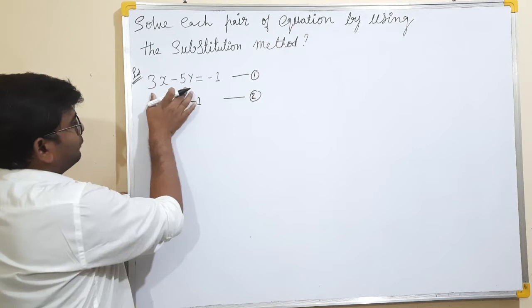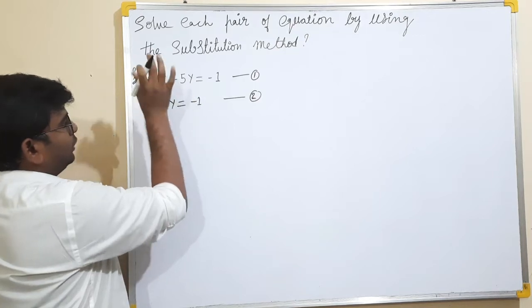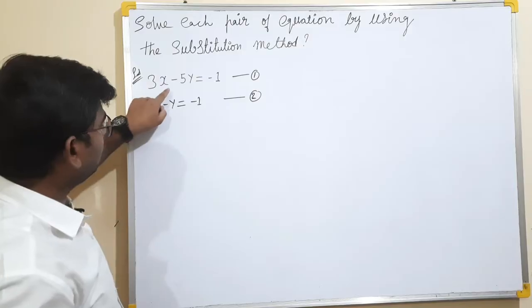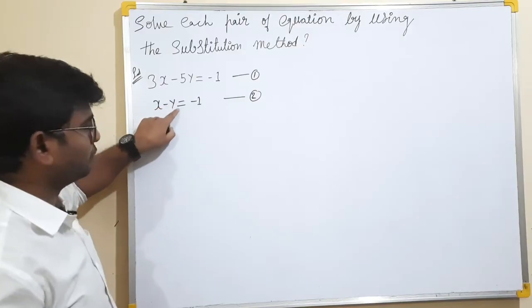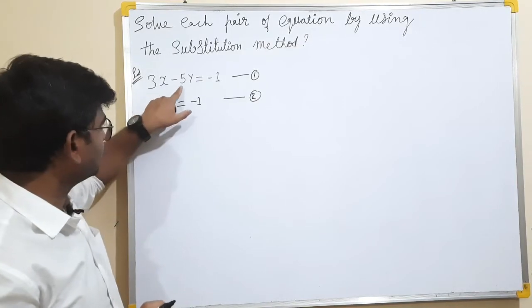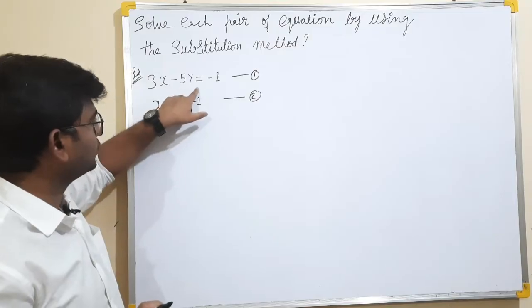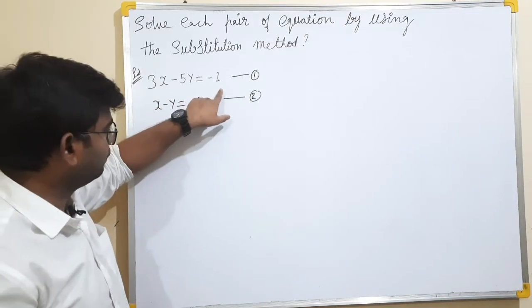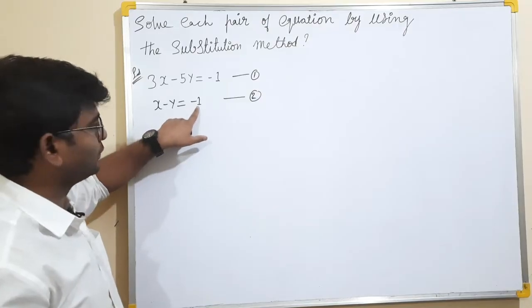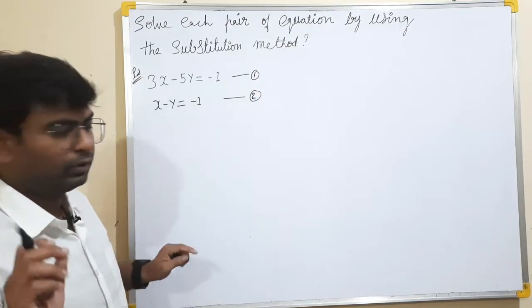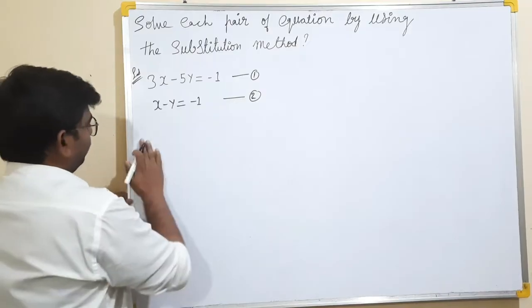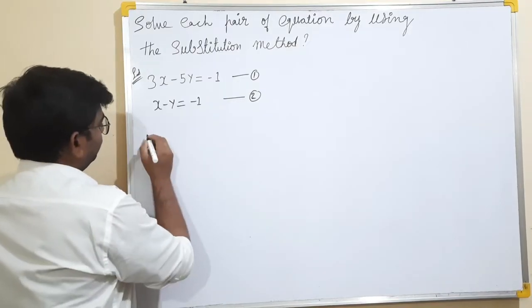So, we have two equations. We will tell you about the given equations. In the second equation, we will tell you about the simple equation: 3x minus 5y equals to minus 1. And x minus y equals to minus 1.